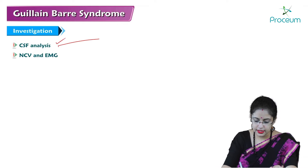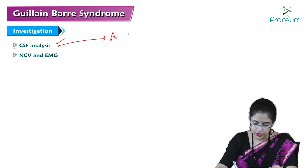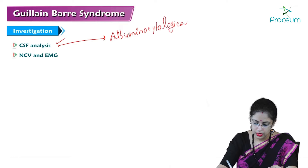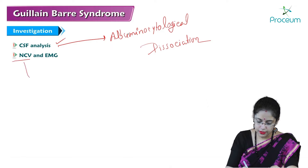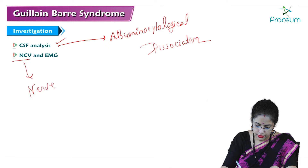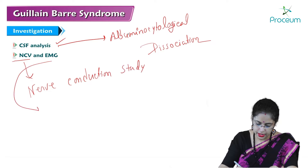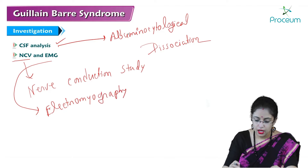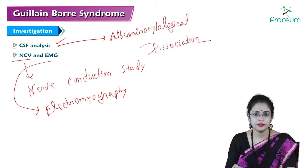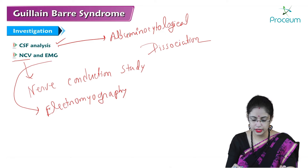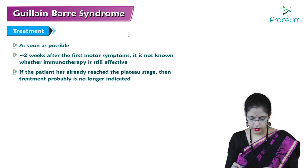Investigations: CSF analysis will show albuminocytological dissociation. NCV stands for nerve conduction velocity study and EMG stands for electromyography. In a suspected patient of GBS, we will do a nerve conduction study, electromyography, and CSF analysis to find out if albuminocytological dissociation is present.